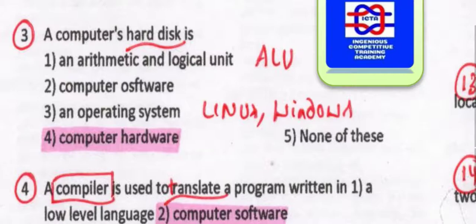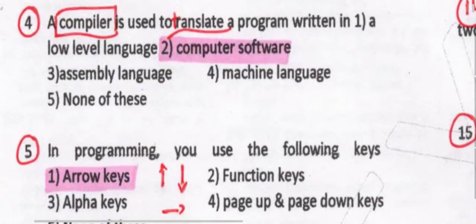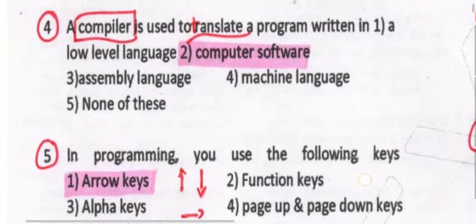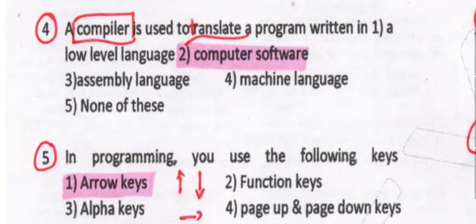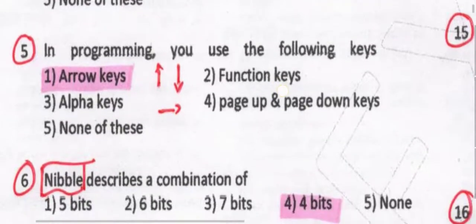Operating system — we know that Linux and Windows are all one type of operating systems, so you should know each and everything in this chapter. A compiler is used to translate a program written in computer software. The main purpose is to translate that program, so you have to remember that.